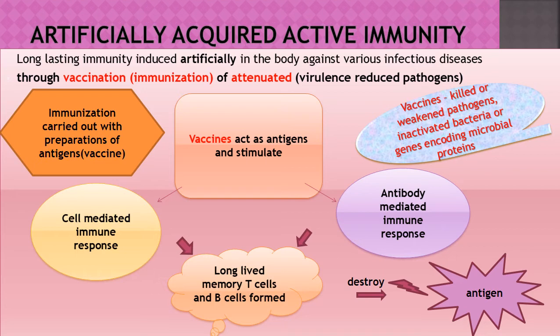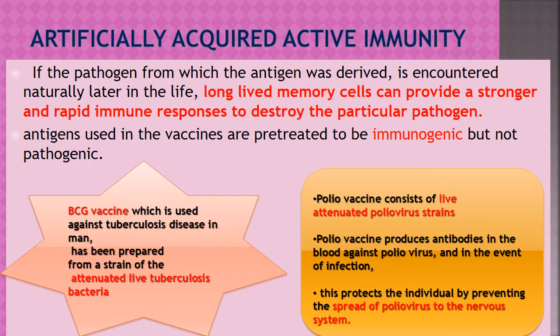Long-lived memory cells are also formed. The effector cells take action immediately and destroy the pathogen, while long-lived memory T and B cells are produced simultaneously. If the same pathogen is encountered years later, these memory cells get activated and produce a stronger and more rapid response that directly destroys the antigen. This is artificially acquired active immunity, which is also long-lasting because the body's immune system is stimulated to produce the response.